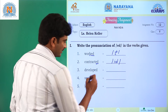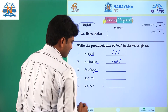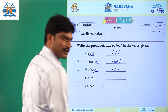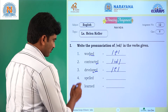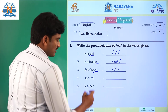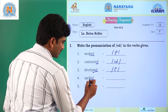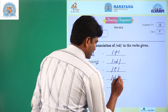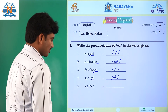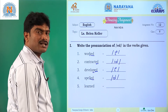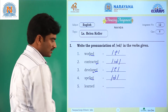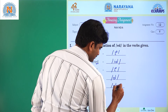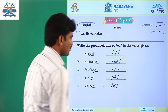Question number 3: developed. Here ED is added and the sound is T sound. Question number 4: spelled. Here ED is added to the L sound and the answer is D sound. Question number 5: learned. Here ED is added to the N and the answer is D sound.